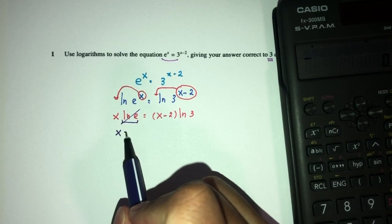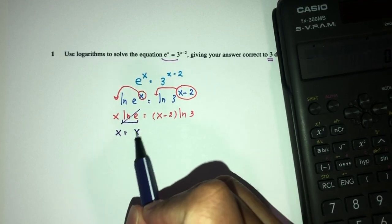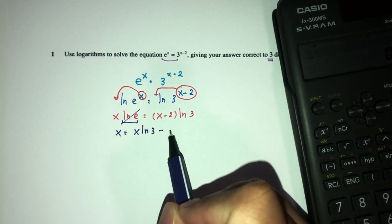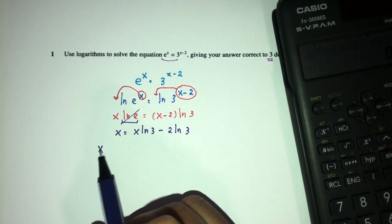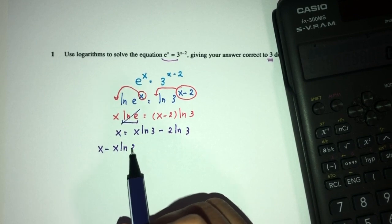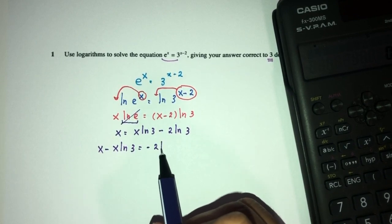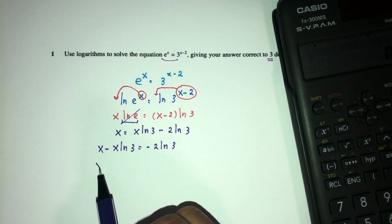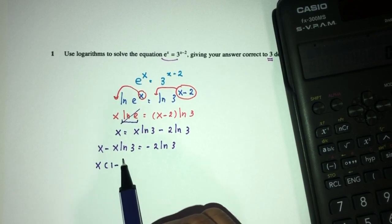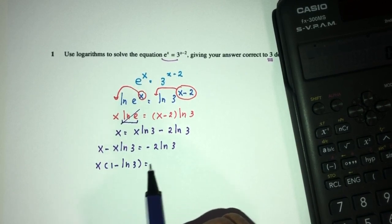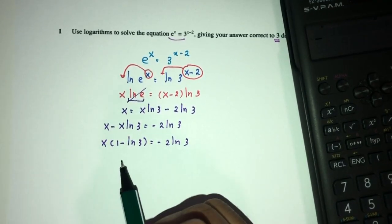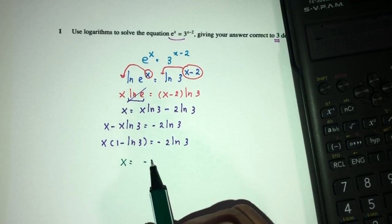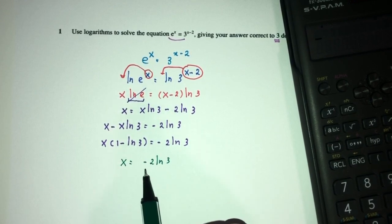We just have to expand. This will be x = x ln(3) - 2 ln(3). Now send all the x to one side: x - x ln(3) = -2 ln(3). So finally we factorize: x(1 - ln(3)) = -2 ln(3). Just trying to make x the subject to find the value of x.